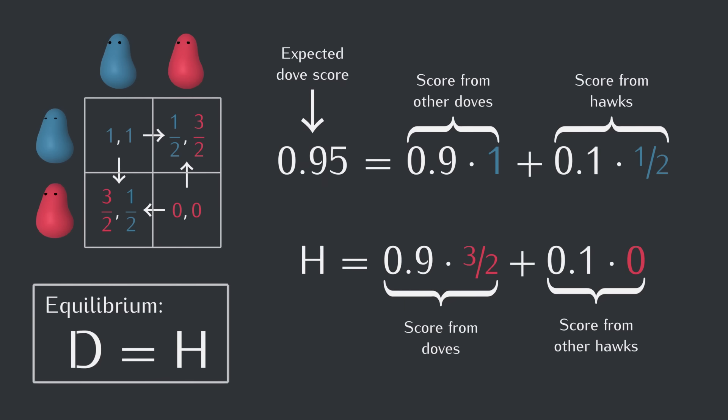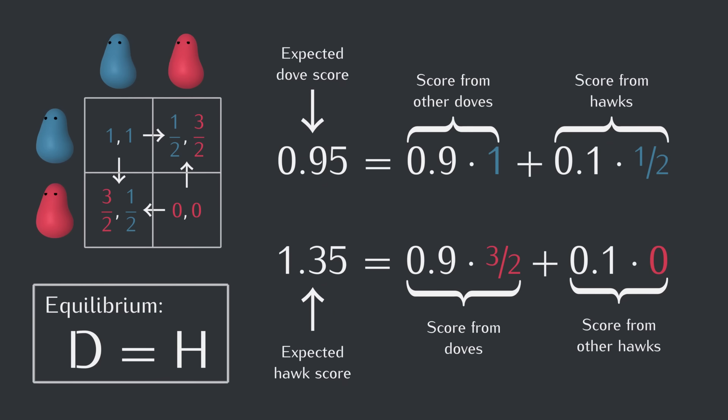And this comes out to 1.35 food on average. Now, notice that 1.35 is more than 0.95. So at 90% doves, hawks will do better, and we'd expect the fraction of hawks to increase in the next generation. So it's not equilibrium, not 90%.